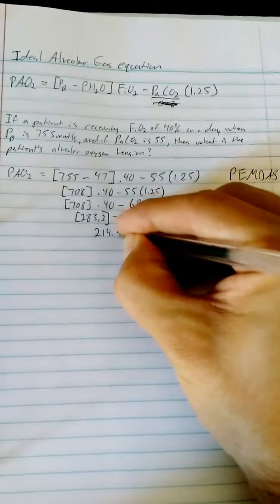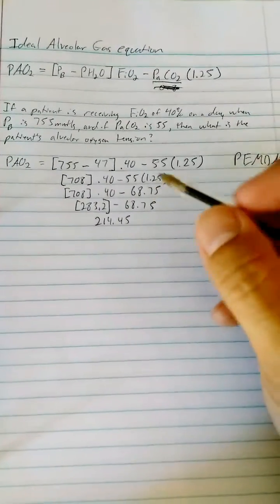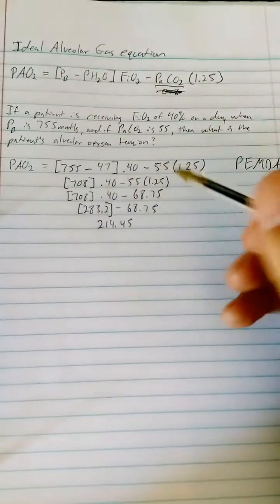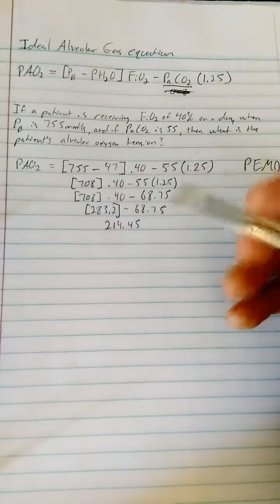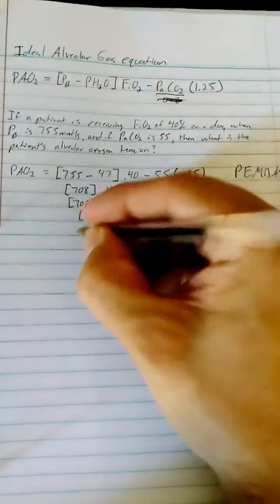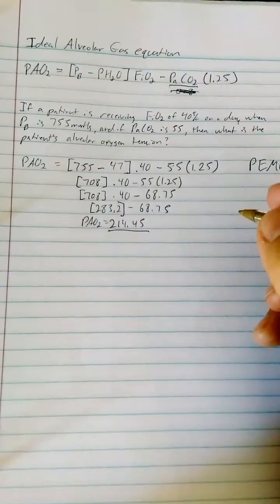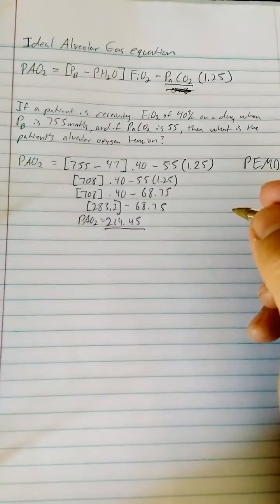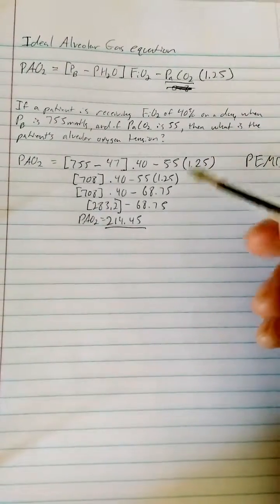Finally, you do this subtraction, 283.2 minus 68.75, and you're going to get 214.45. Make sure you're comfortable doing multiplication, division, and subtraction. You're generally not allowed a calculator, but in this case, our PAO2 is 214.45.